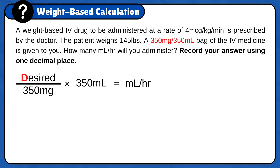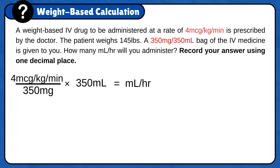For desired, you will plug in the doctor's order: 4 micrograms of medication for every 1 kg of patient's weight per minute. However, you will notice that we need to do some conversions. Convert microgram to milligram to match the unit on the bottle so they can cancel out.